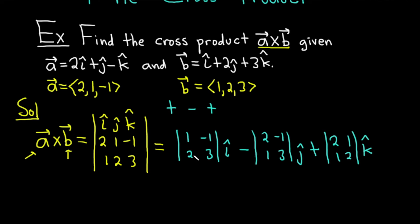Let's go over that again because this is the most important step and it's really easy to make mistakes. The formula is called cofactor expansion. The easiest way to memorize it is plus, minus, plus — and for each entry in the first row, cross out the corresponding row and column to get the 2x2 sub-determinant.